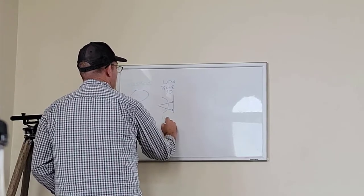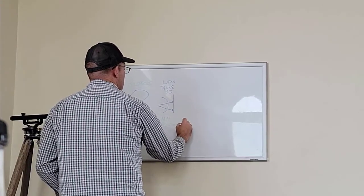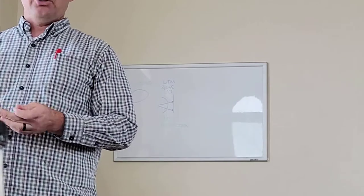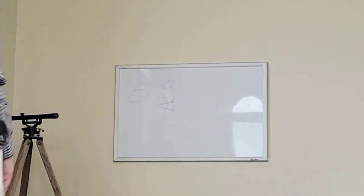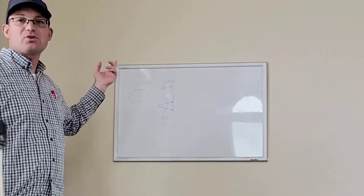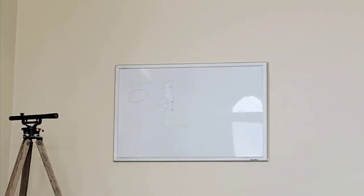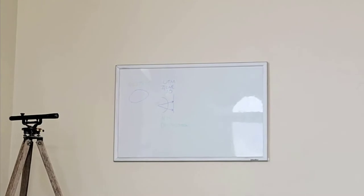UTM Zone 10 may have an assigned ellipsoid, or you may be able to use Universal Transverse Mercator with different kinds of ellipsoids. Hunter Googled it: the World Geodetic System ellipsoid is now generally used to model the Earth in the UTM coordinate system — so WGS-84.